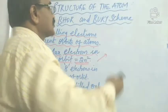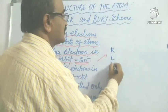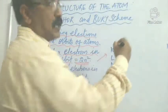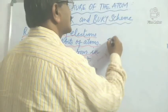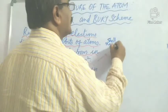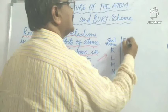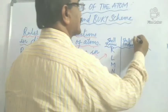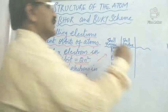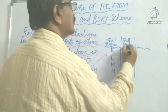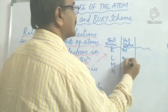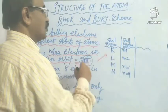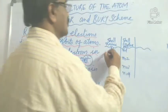We will see the shells. What are the shells in an atom? They are the K shell, then the L shell, M shell, and N shell. The shell index for K shell is N = 1, L shell is N = 2, M shell is N = 3, and N shell is N = 4. Now we will see the maximum number of electrons that these orbits can have using the formula 2N².